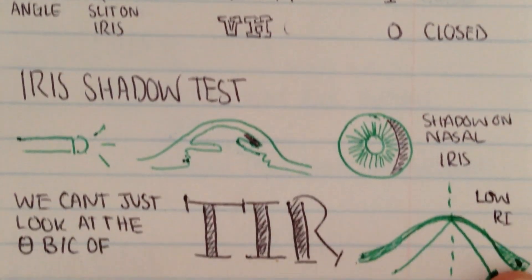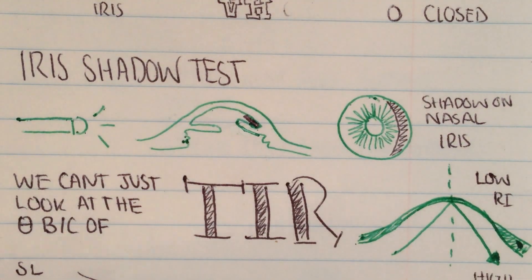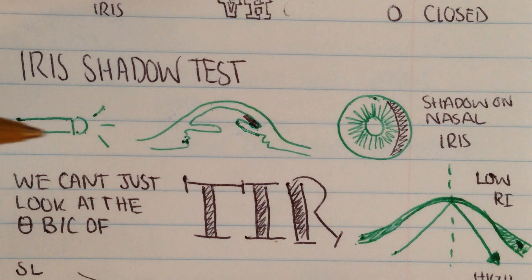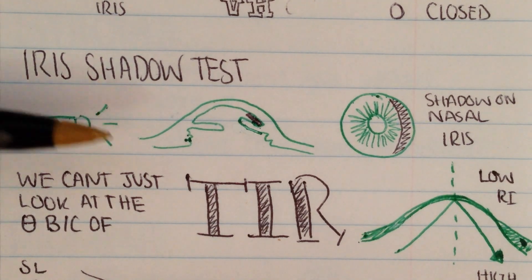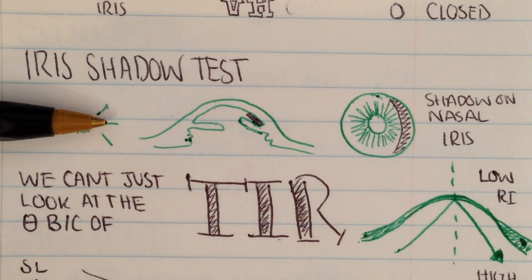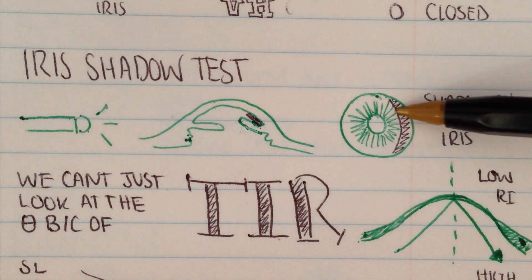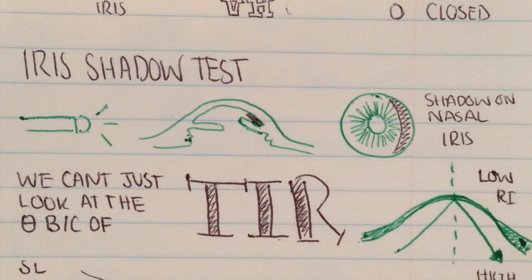The next test we can perform is the iris shadow test. Again, this is a very simple test that you can do in practice, and all you need to do is place a light, your pen torch, parallel to the cornea. If you see a shadow casting onto the iris, then you know there's a possibility that that angle is narrow. If there's no shadow, then you know it's nice, wide, and open.